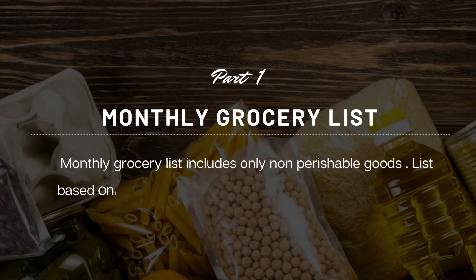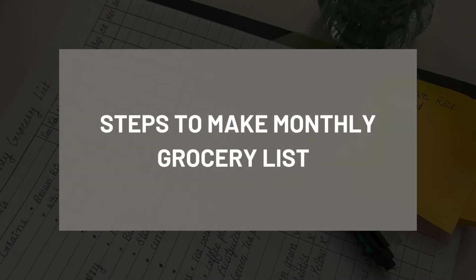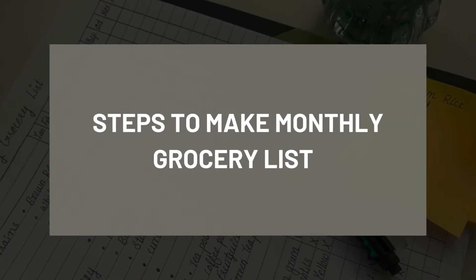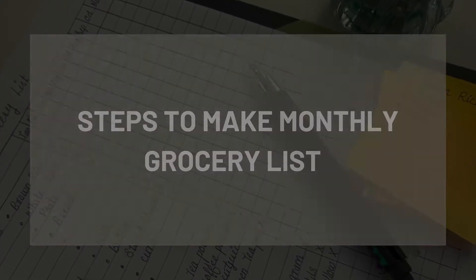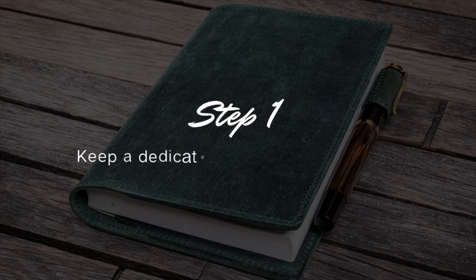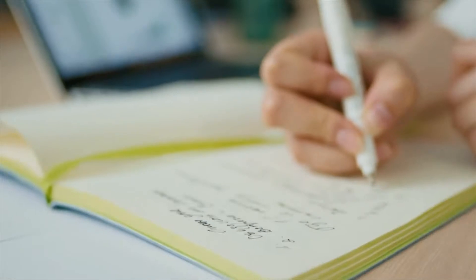First, we are going to prepare the monthly grocery list. This list includes only non-perishable goods — that means only the products that can be stored for at least one month or more. Now, the steps to make a monthly grocery list. Step 1: keep a dedicated book for your kitchen planning.